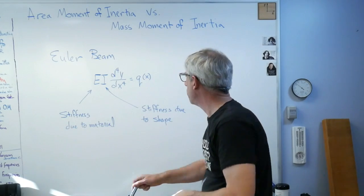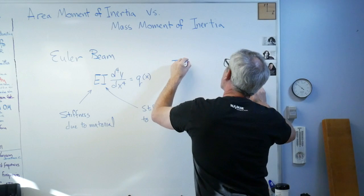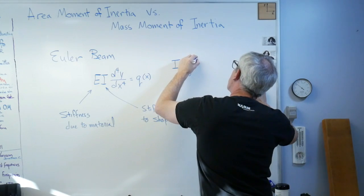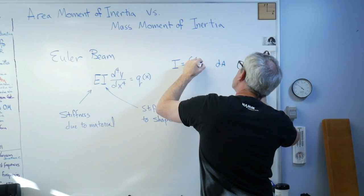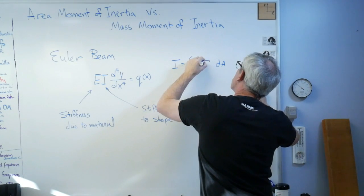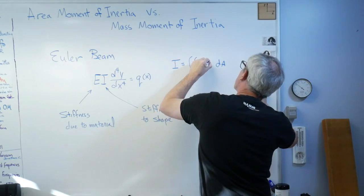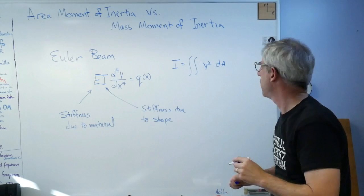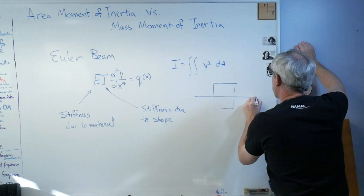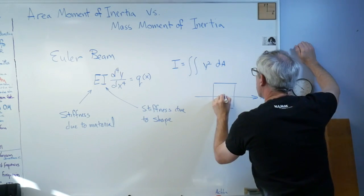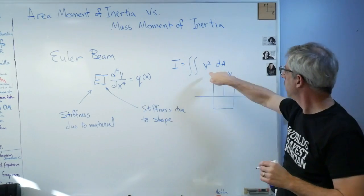That means the stiffness of a steel beam is a lot higher than a beam made out of wood or silly putty or something. And this I is stiffness due to shape.